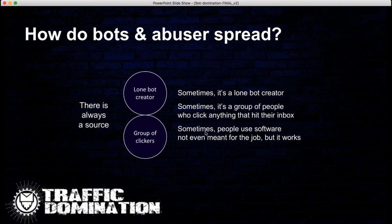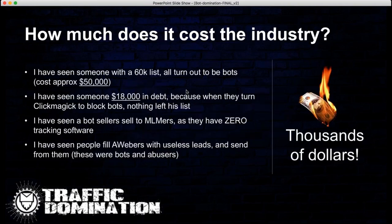So how much does it cost the industry? I've seen someone with a 60,000-person list that pretty much turned out to be all bots — the worst case I've seen. To build a list that big would have cost around $50,000. They had ClickMagick blocking turned off, and as soon as they turned it on, they were left sending 20 to 30 clicks. I've also seen someone $18,000 in debt because the same thing happened — as soon as they blocked everything, there was nothing left in their list.